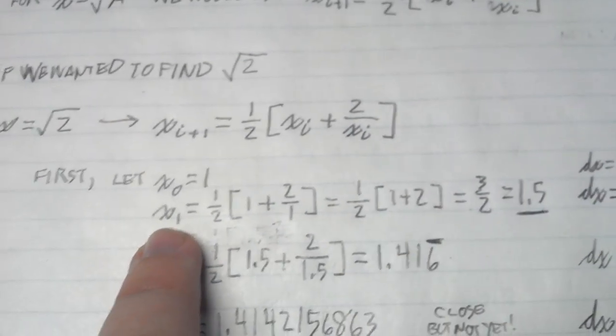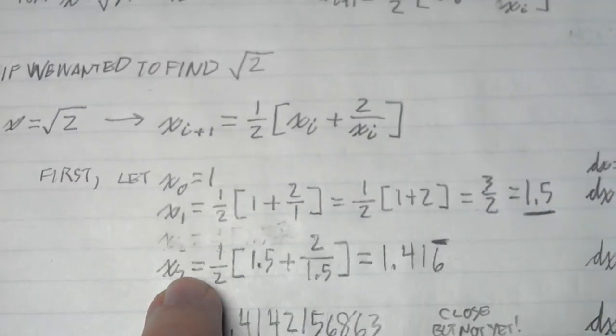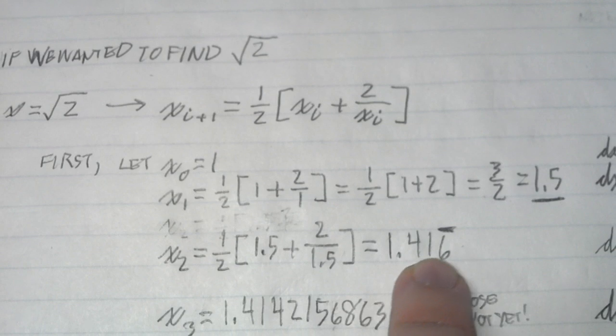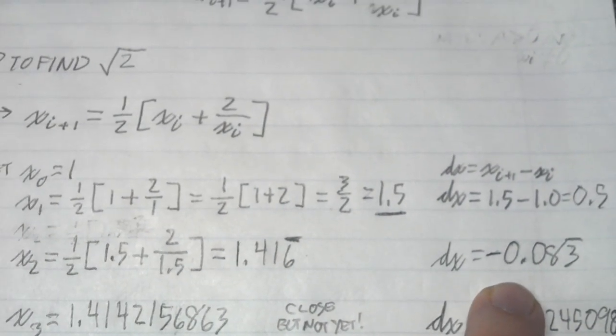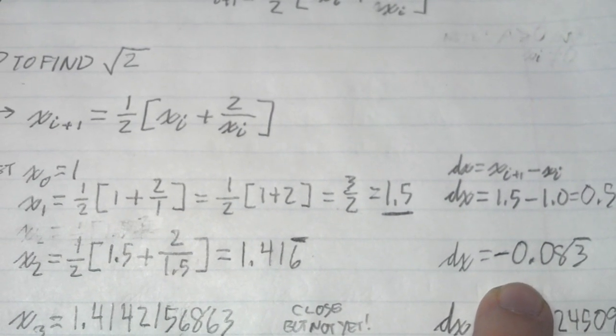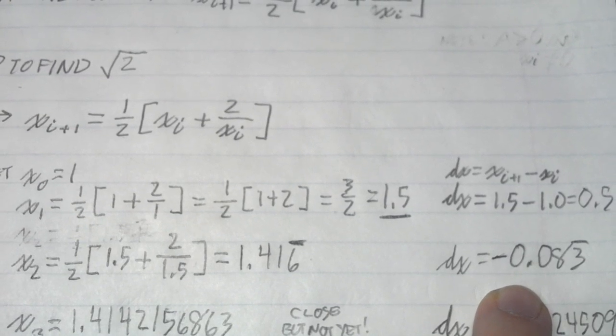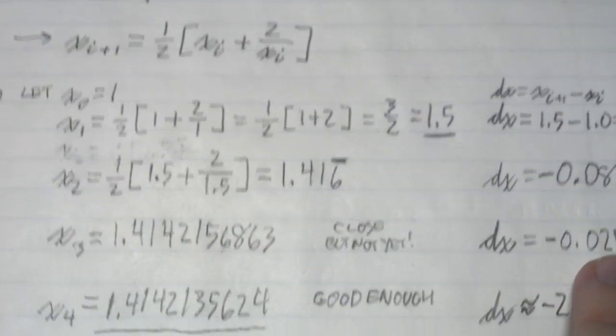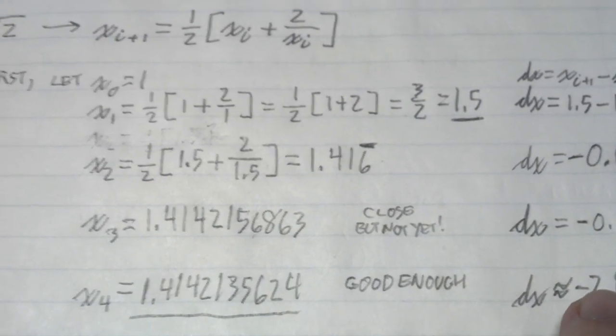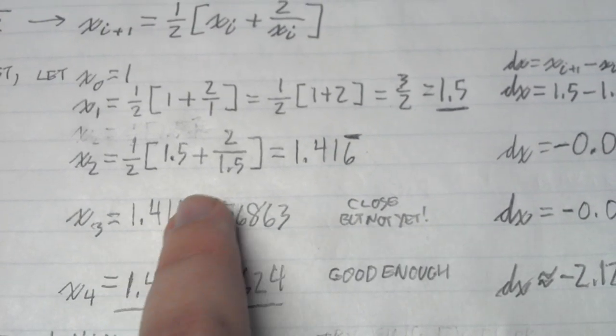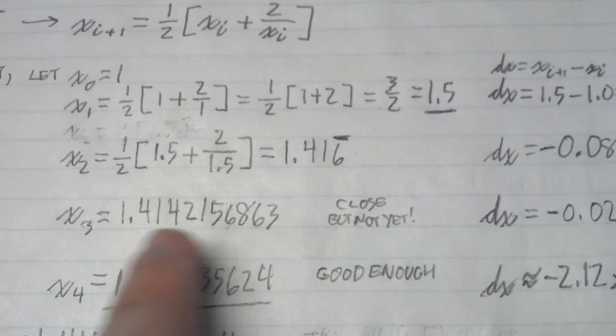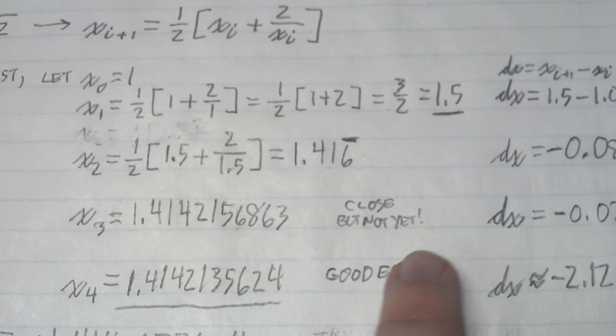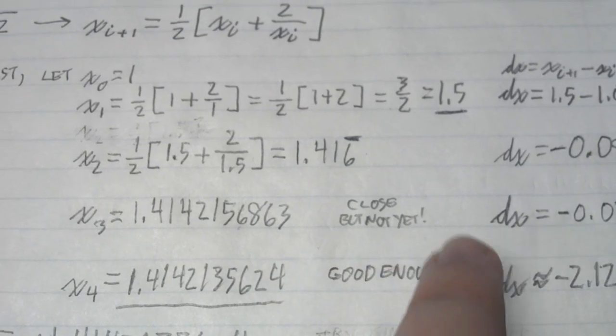We then plug in x₁ to create our next answer: 1.416 repeating, with a difference of minus 0.083 repeating. If the math gets complicated, you could use a scientific calculator or a spreadsheet program like Excel, OpenOffice, LibreOffice, or Google Docs.